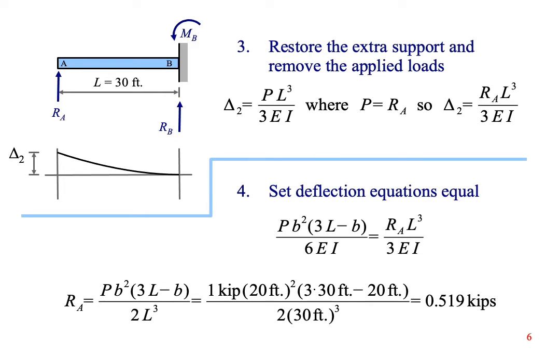Now, we restore the extra support and remove the applied loading. We treat the reaction force at the extra support as a real force pushing up on the beam causing it to bend. Appendix F gives us a formula for deflection at the free end of the beam that is caused by a point load located at the free end of the beam. The formula says PL cubed over 3EI, but we know that P is actually R sub A.